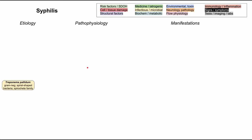Syphilis starts with a bacteria called Treponema pallidum. This is a gram-negative bacteria. It's spiral-shaped, and it's in the spirochete family.